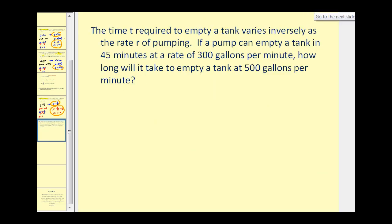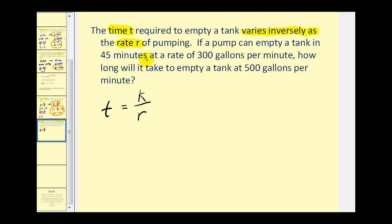Let's take a look at a real-world application. The time t required to empty a tank varies inversely as the rate r of pumping. If a pump can empty a tank in 45 minutes at a rate of 300 gallons per minute, how long will it take to empty a tank at 500 gallons per minute? The time t varies inversely as the rate r, so our inverse variation equation is t equals k divided by r. We're told t equals 45 minutes when r equals 300 gallons per minute, which will allow us to determine k.